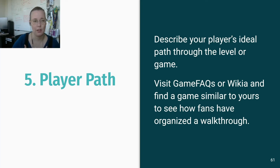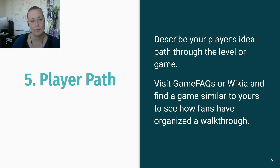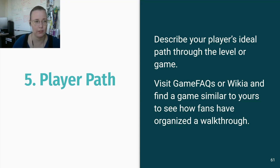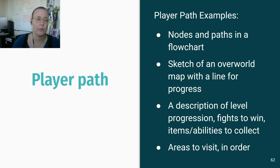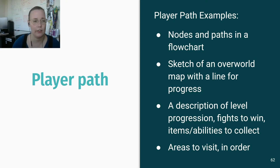The last thing is the player path — a description or drawing of your player's ideal path through the level or game. If you visit game wikis or walkthroughs for a game similar to yours, you can see how fans have organized their own walkthroughs, which is a great model for yours. Examples could be nodes and paths in a flow chart, a sketch of an overworld map with a line for progress, a description of level progression with fights to win or items to collect, or a list of areas to visit in order.